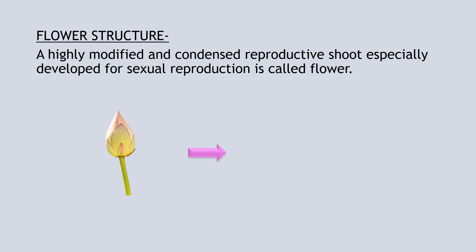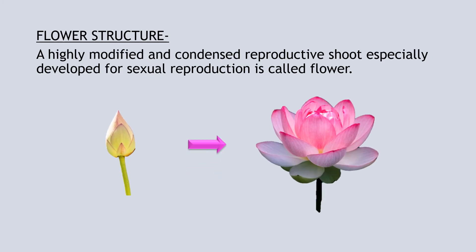Flower Structure. A highly modified and condensed reproductive shoot, especially developed for sexual reproduction, is called a flower. The floral buds develop into a flower. It consists of Bract, Petzal, Thalamus, Calyx, Corolla, Androecium, and Gynoecium.